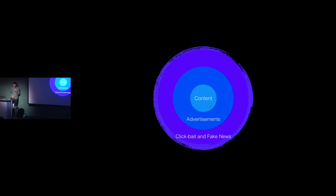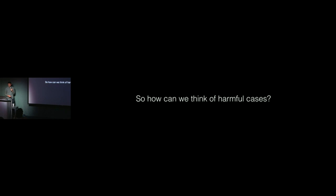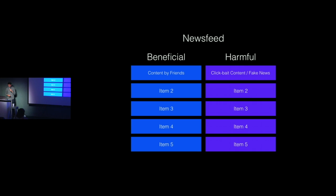Let's look at Facebook. The primary experience is to create and consume content. The secondary effect is for Facebook to act as a revenue generator through ads. The tertiary effect is the spread of fake news and clickbait content. The chief operating officer said, 'we do not think enough about the abuse cases.' We can map out the extremes for benefits and harms of a feature. The news feed was designed to show the most useful content by engagement, but the most engaged content was clickbait headlines that became fake news. Bring in people from diverse backgrounds — you can reveal unexpected problems.